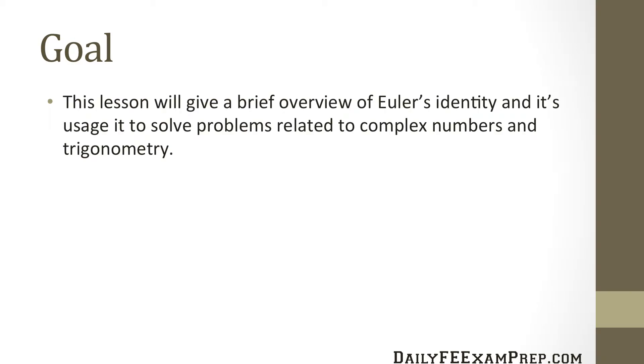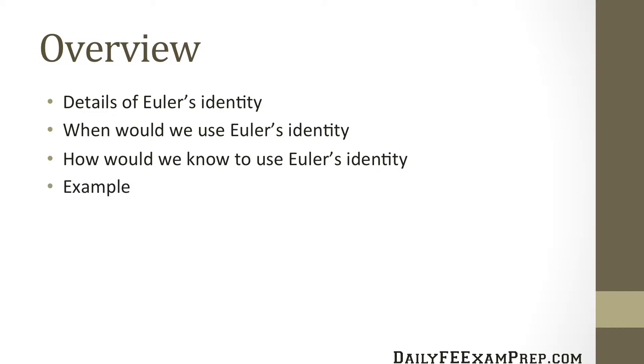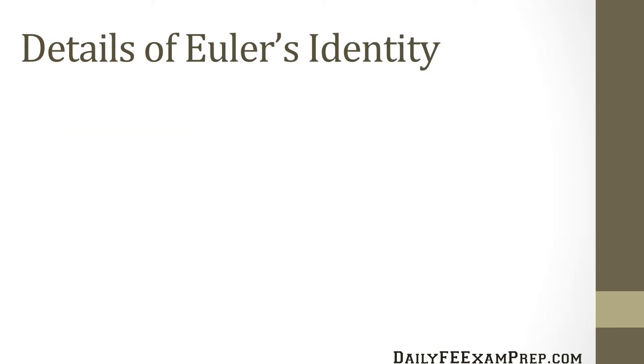The goal of today's lesson is to give you a brief overview of Euler's identity and its usage to solve problems related to complex numbers and trigonometry. The overview structure of today's lesson is first we'll talk about the details and specifics of Euler's identity, when would we use Euler's identity, how would we know to use Euler's identity when we look at it for a problem, we'll walk through a specific example, and I'll give you some additional sample problems to take home with you after the lesson.